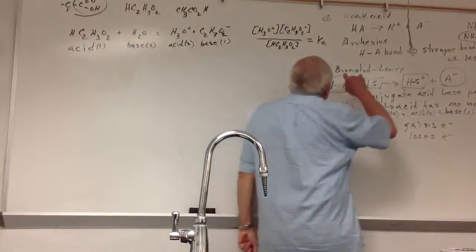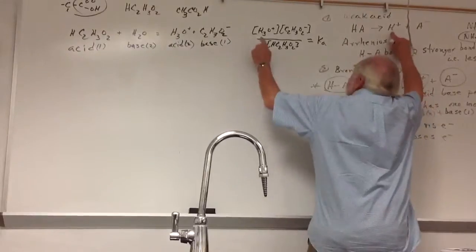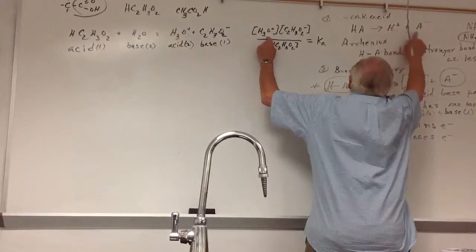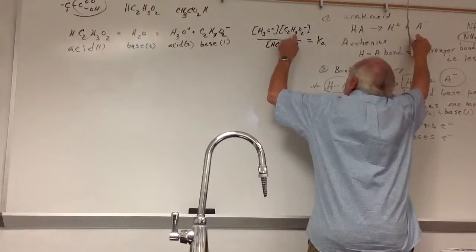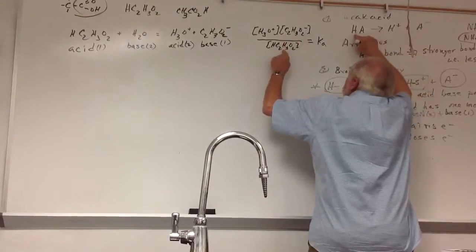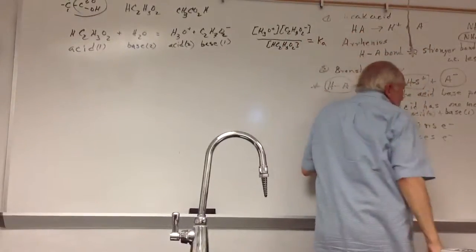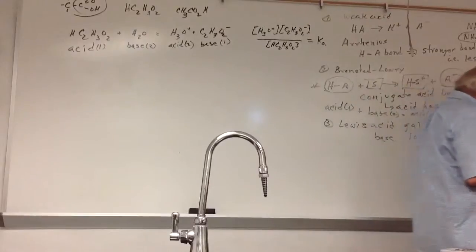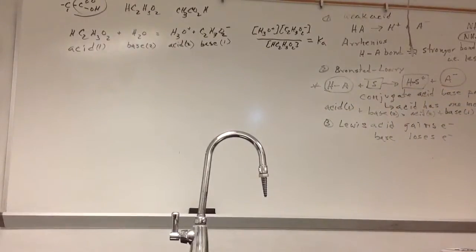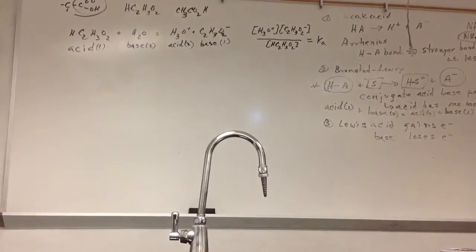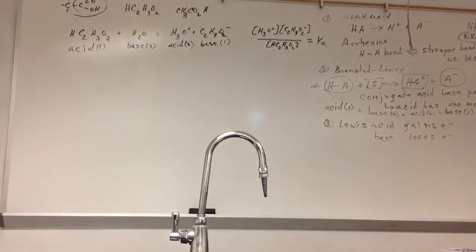Notice if I do Arrhenius, I get the same sort of thing, except I write H+. This is still the anion—it would have been acetate, and that's the anion. And there's acetic acid. The water didn't appear in the Arrhenius way of doing it, so the equilibrium expression is exactly the same. In the old days—it is the old days—because we don't bother putting water in there.